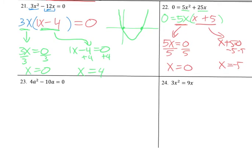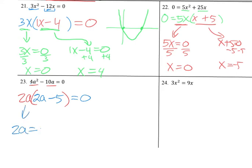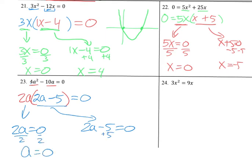For the next one, I've got a 2 in common, so I can divide both terms by 2, and I can take an a out of both as well. That leaves me with 2a times 4a minus 5. I set each factor equal to 0: 2a equals 0 and 2a minus 5 equals 0. Dividing by 2 gives a equals 0. Adding 5 to both sides gives 5 equals 2a, and dividing by 2 gives a equals 5 over 2.